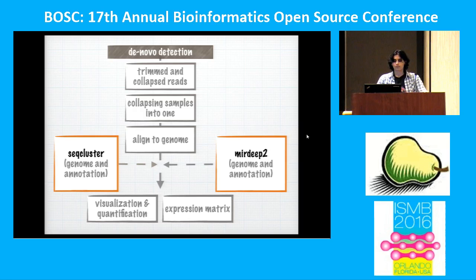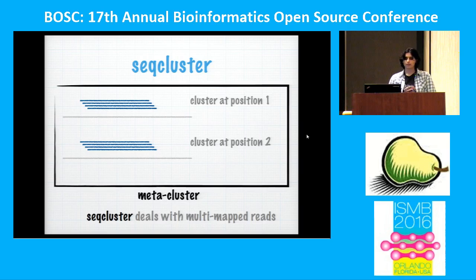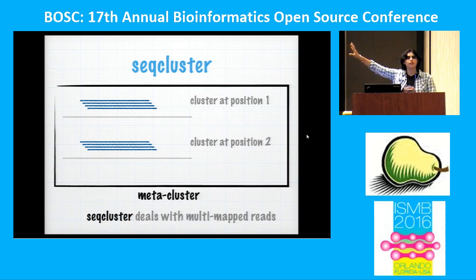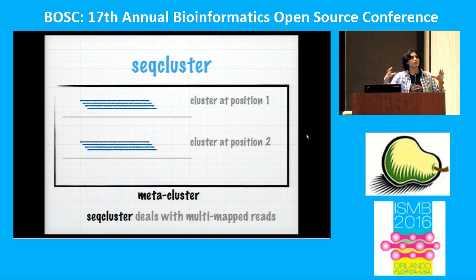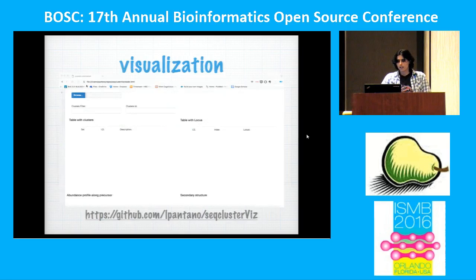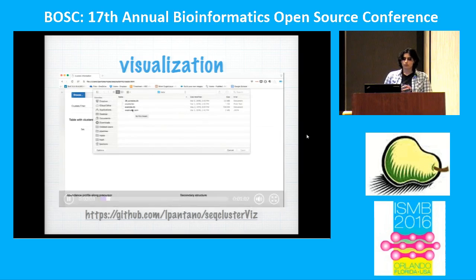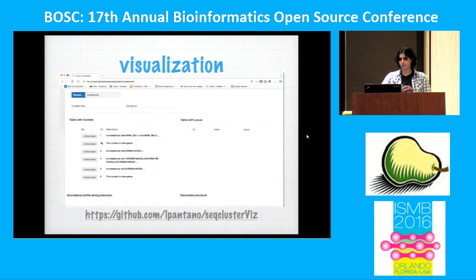I want to mention what seqcluster does, because it's a tool that can deal with multi-mapped reads. The idea is that you have sequences mapping to the same position in two different locations in the genome — this can happen if you have two copies of the same tRNA. You get only one entry called a metacluster. This is good because it allows you to use standard tools, calling the repetitive sequence only once. There's an HTML visualization you can download.